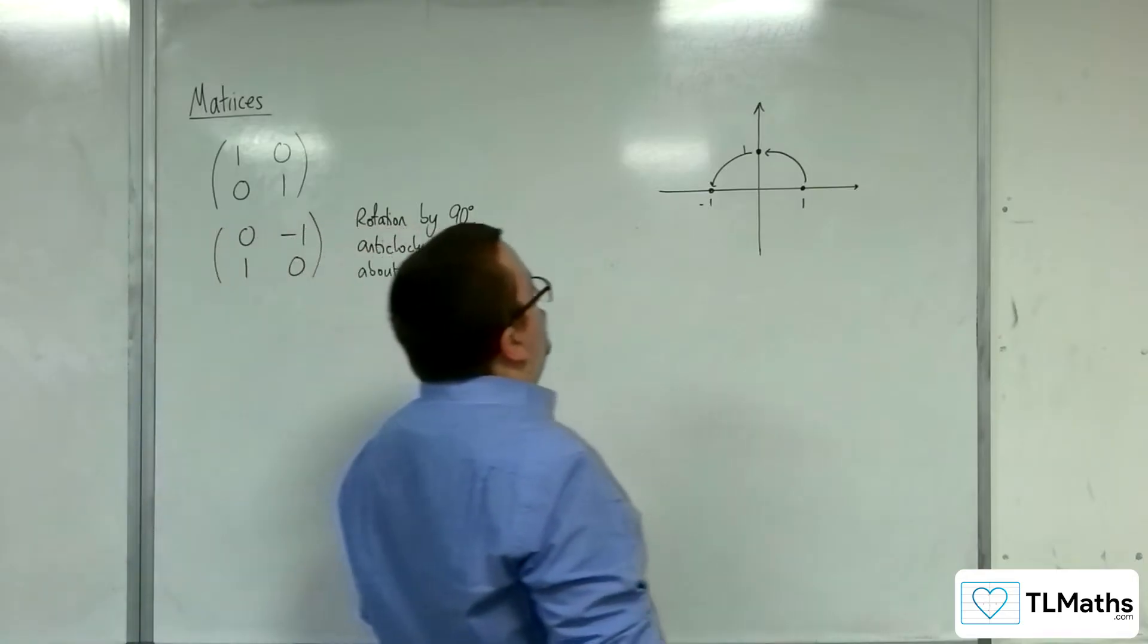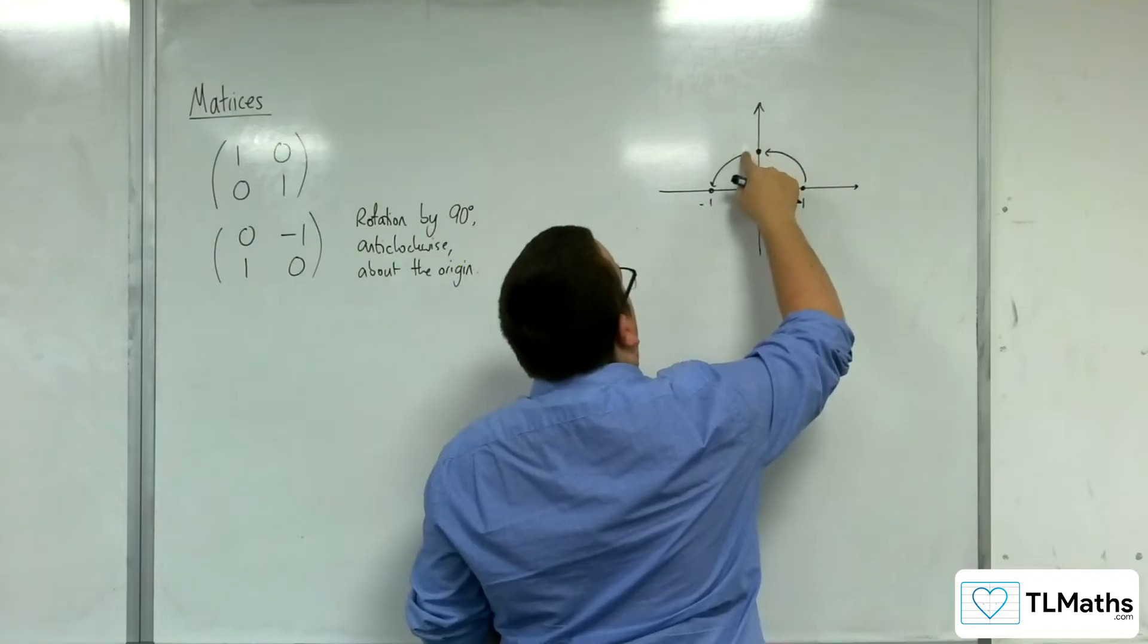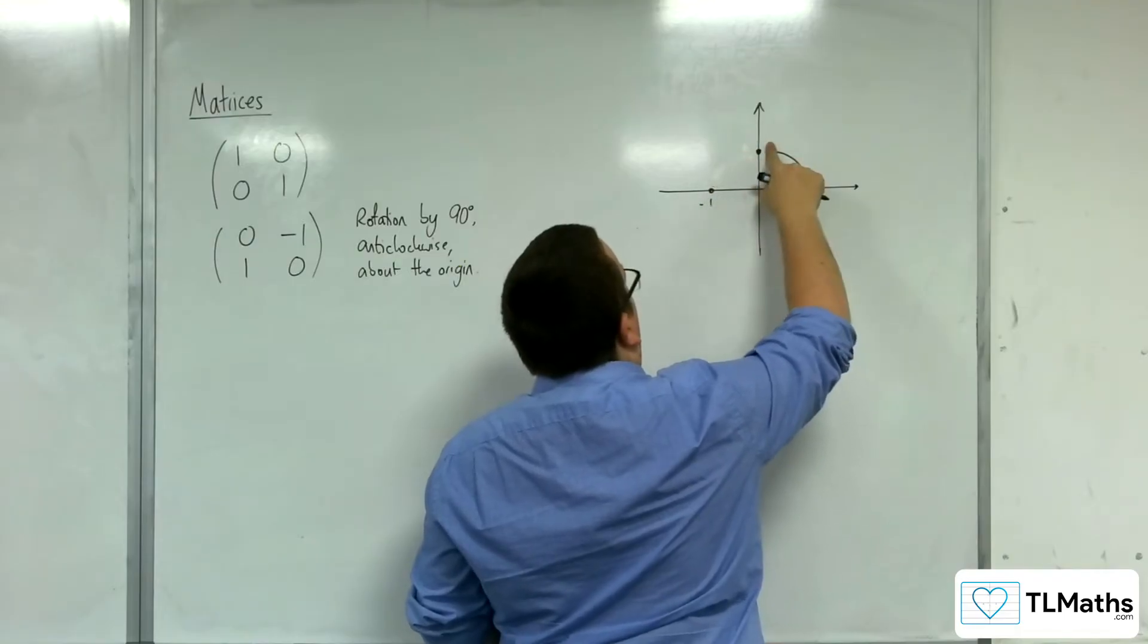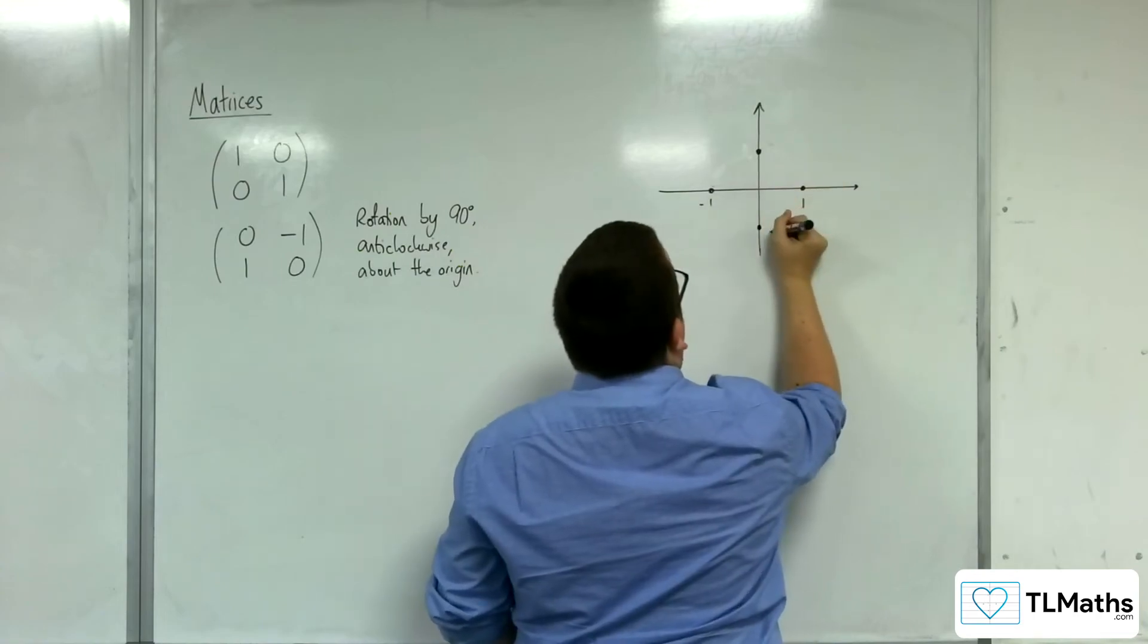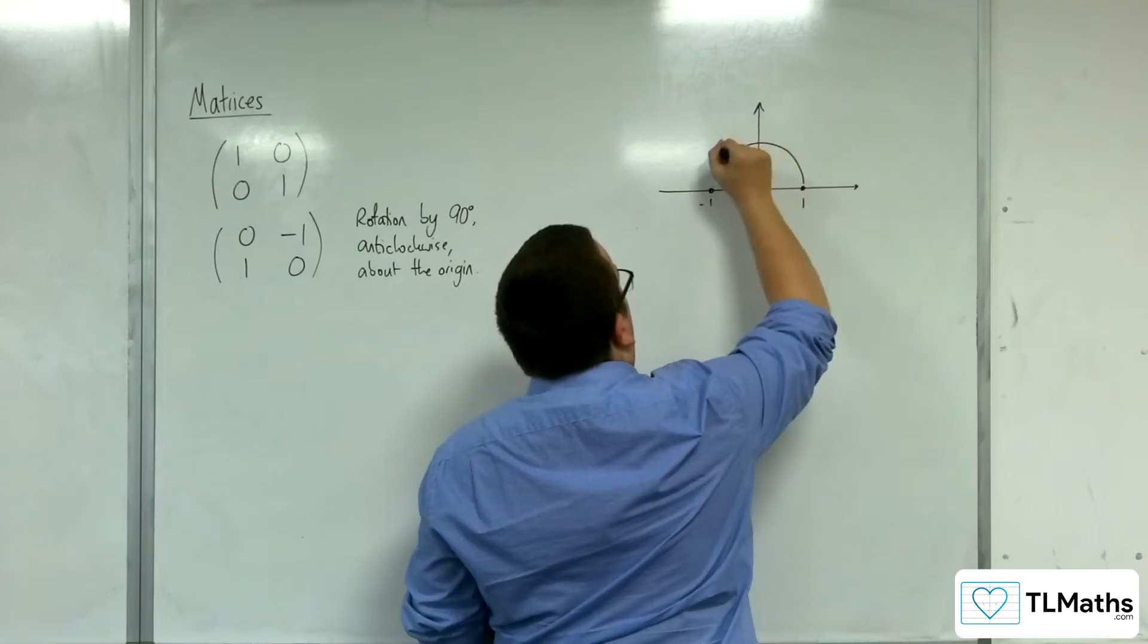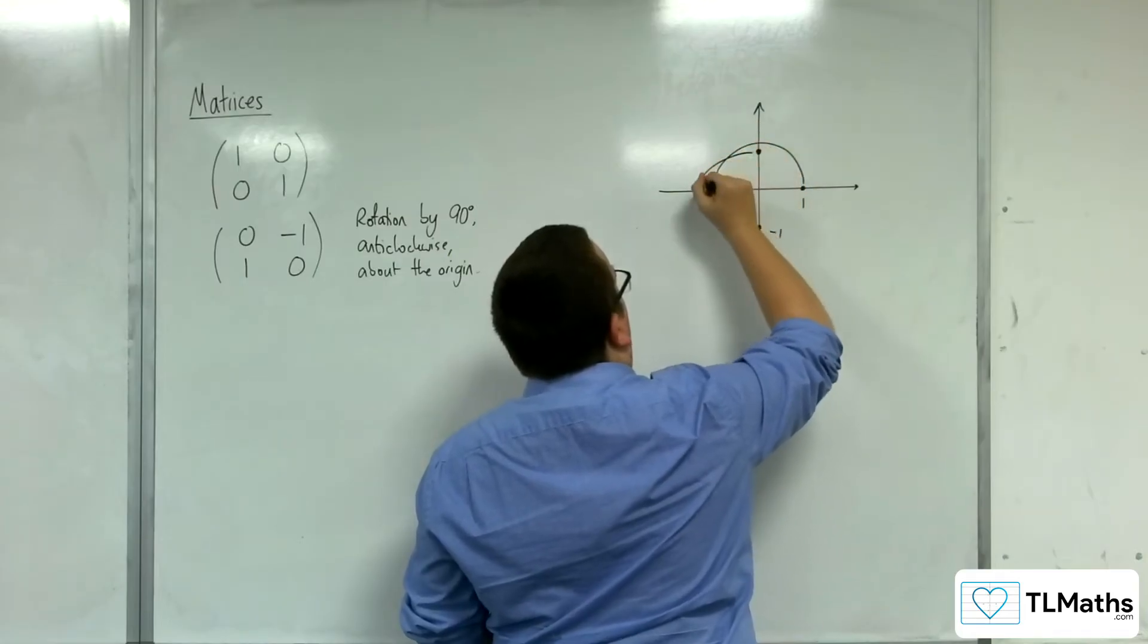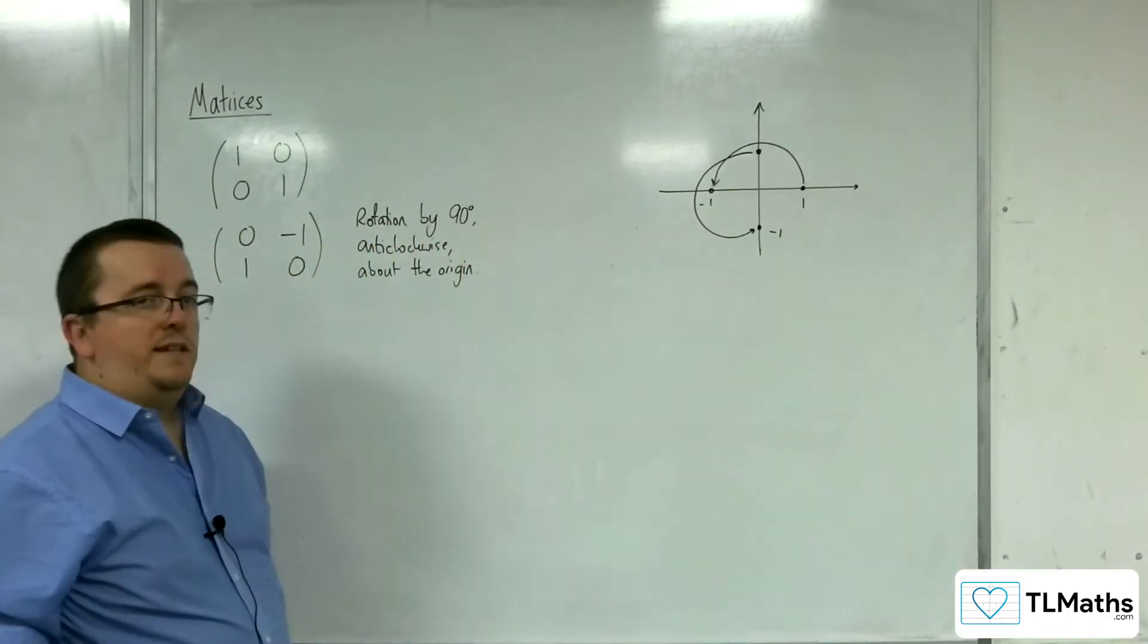What about 180 degrees? So what would happen then? Let's get rid of these arrows. We'll have to put one down here. So this point here would rotate round to this point. And this point would rotate round to this point. If we rotated by 180 degrees.